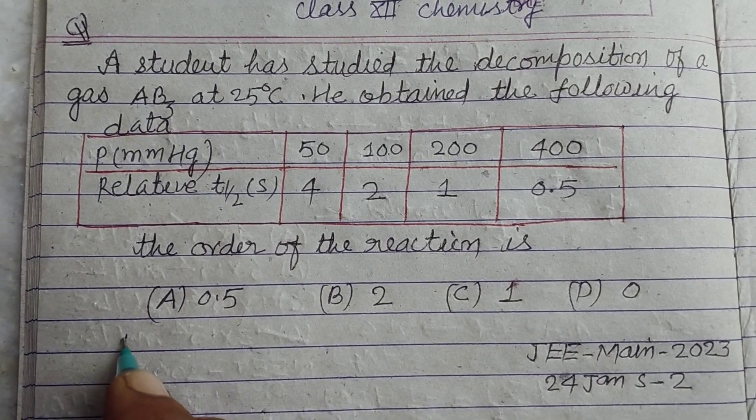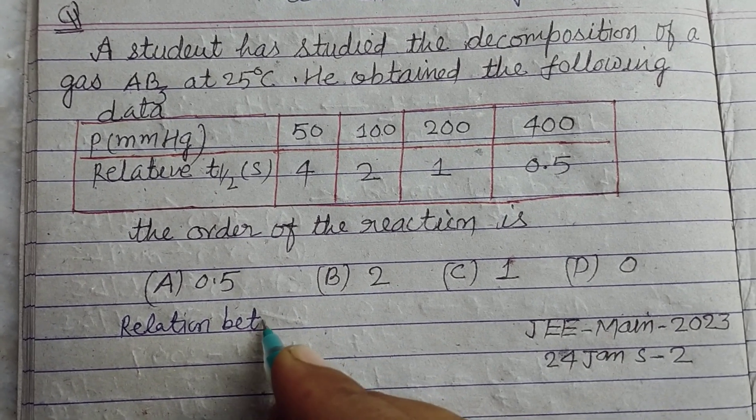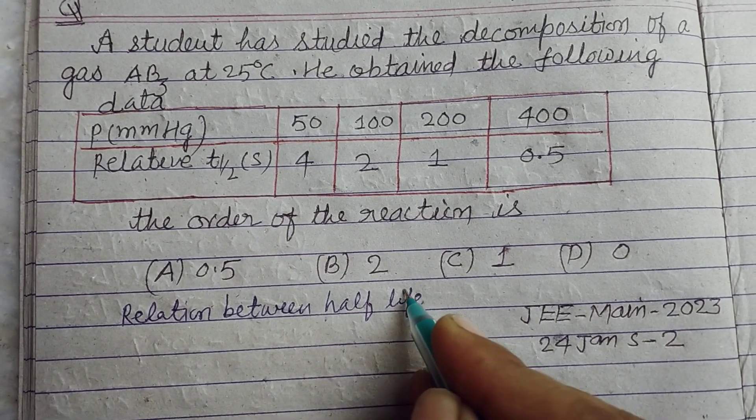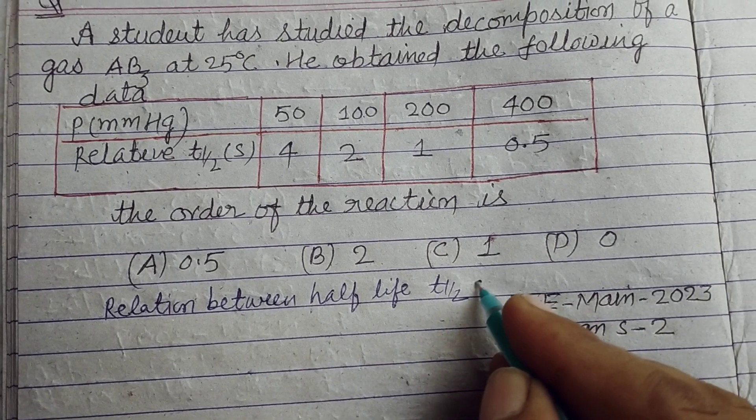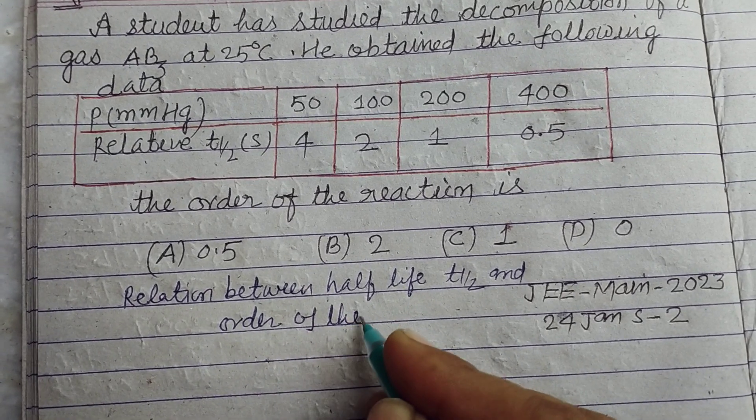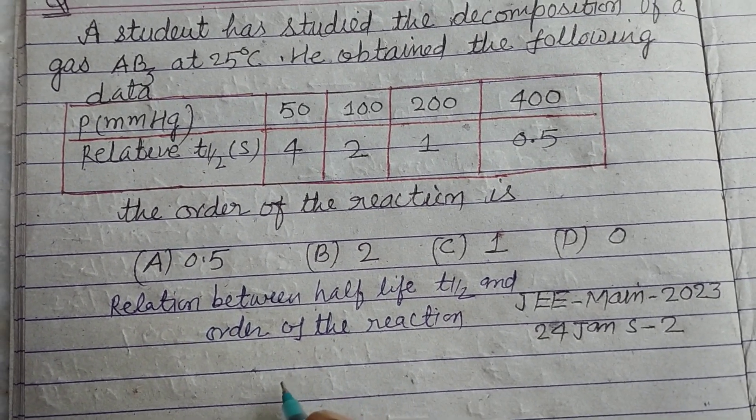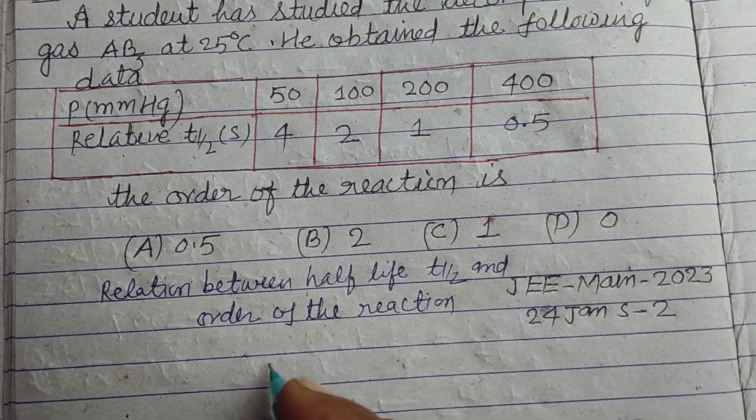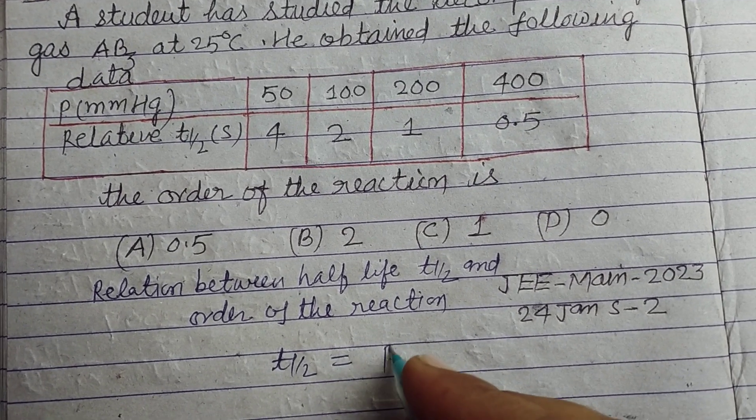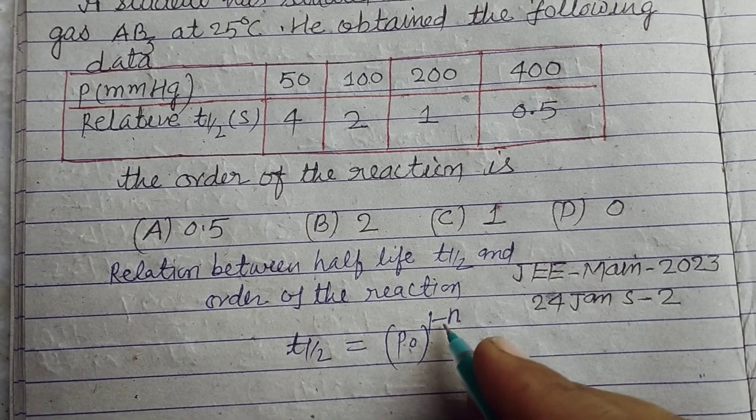Student, the relation between half-life T1/2 and order of the reaction. Order of the reaction is, here pressure of the gas is given. Student, so T1/2 is equal to P0, pressure of the gas, to the power of 1 minus n, where n is the order of the reaction.